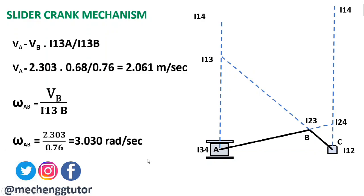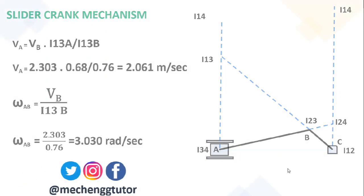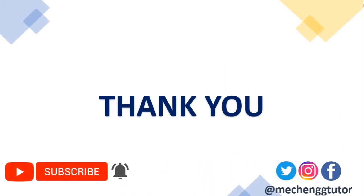The angular velocity of connecting rod AB is 3.030 radians per second — that is the ultimate answer we need. Note that V_A (2.061 m/s) represents the linear velocity of the slider, since the slider moves in a straight line and has no angular velocity. The omega_AB calculated gives the angular velocity of the connecting rod AB.